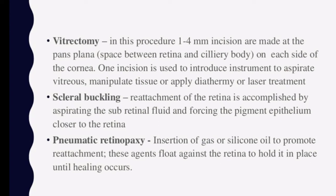Then comes vitrectomy. In vitrectomy, you make a 1–4 mm incision at the pars plana, which is in the area of the retinal ciliary body. You create an incision, use an instrument to aspirate the vitreous, manipulate the tissue, and then apply diathermy or laser treatment.